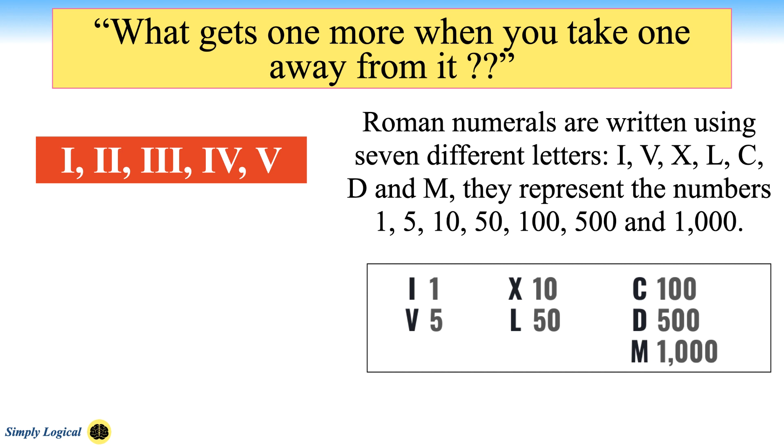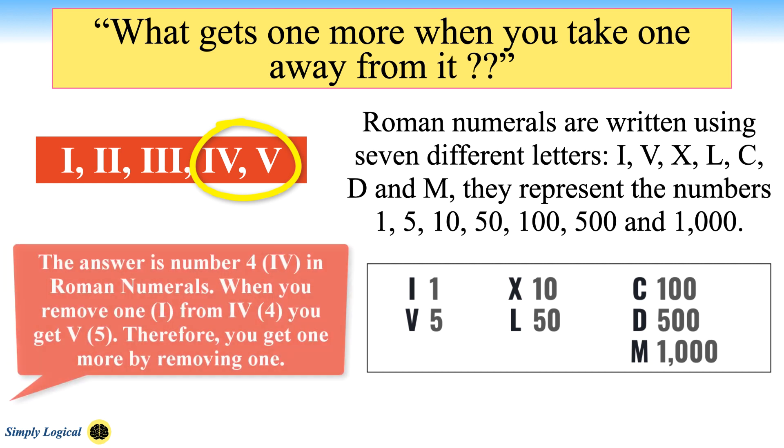In Roman numerals, the numbers 1 to 5 are written like this. Look at the number 4 and 5 in Roman numerals. 4 is depicted with an I and a V, while 5 is just a V. Now look back at the riddle. What gets 1 more when you take away 1? The answer is number 4, which is represented in Roman numerals as IV. When you remove I from IV, that is from 4, you get V which is 5.